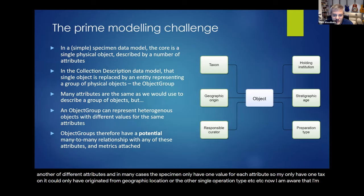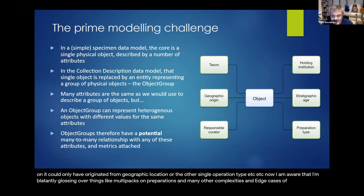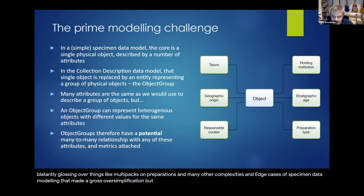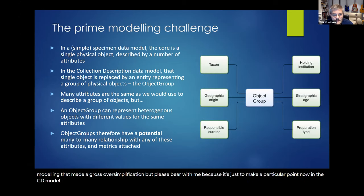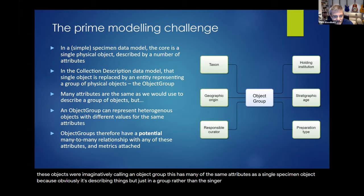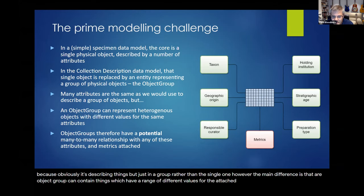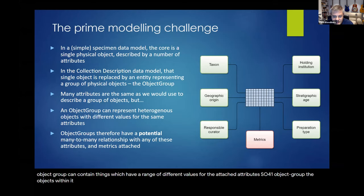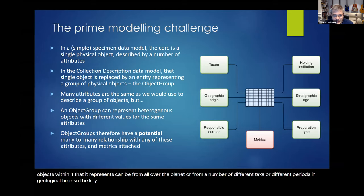I'm aware I'm blatantly glossing over things like multi-taxon preparations and many other complexities of specimen data modeling — that's a gross oversimplification, but please bear with me. In the CD model, we effectively replace that single object entity in the middle with an entity that instead represents a group of these objects — what we're calling an object group. This has many of the same attributes as a single specimen object, but the main difference is that our object group can contain things which have a range of different values for the attached attributes. So for one object group, the objects within it can be from all over the planet, from a number of different taxa, or different periods in geological time.